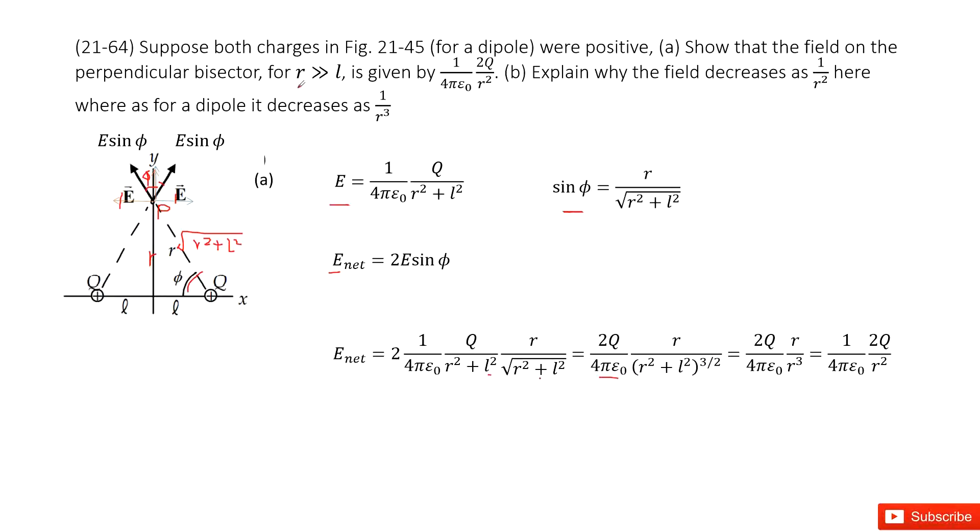Now we can simplify further because it tells us the keyword: R is much larger than L. So that means in this term, the L can be cancelled. Now you can see we get R cubed, and this R cancels one R. We get the answer here.